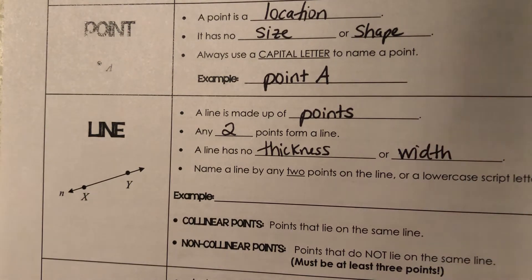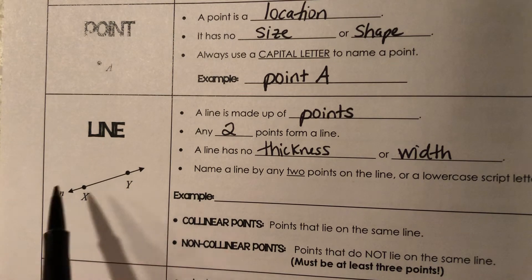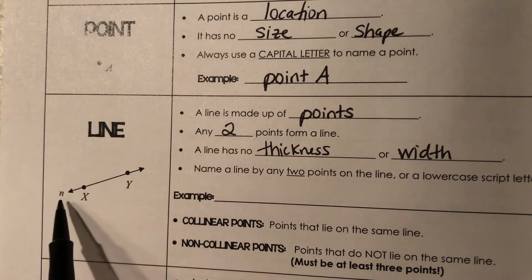It has no thickness or width. Now, again, that seems kind of counterintuitive because of how we draw them to visualize them in math, but it actually doesn't have a thickness. And you name a line by any two points on the line or a lowercase script letter. So for example, over here, we have the points X and Y, and it also had this little N over here on the side.